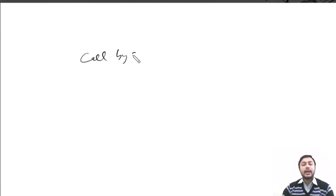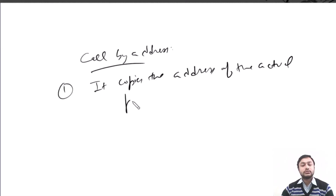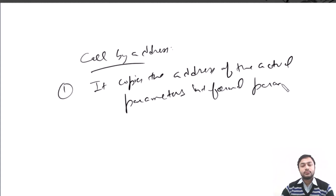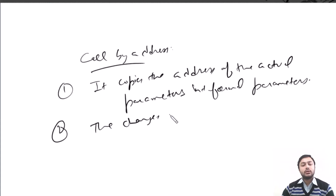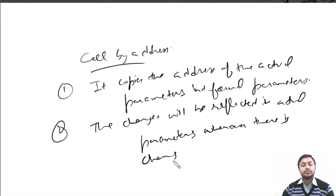In call by address, the first point is that it copies the address of the actual parameters into the formal parameters. The second point is that the changes made in the formal parameters will be reflected in the actual parameters.